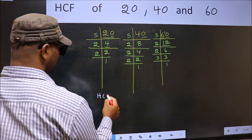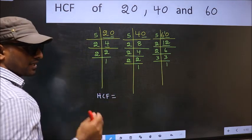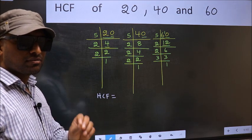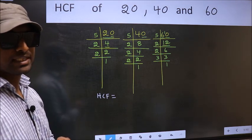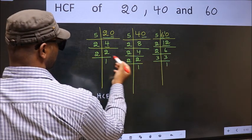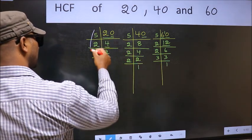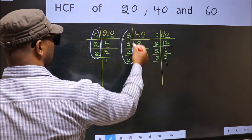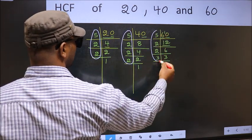HCF is the product of numbers which should be present in these 3 places. That is here, and here, and also here.